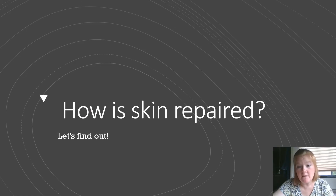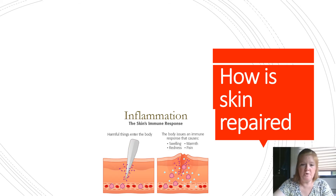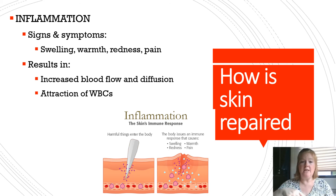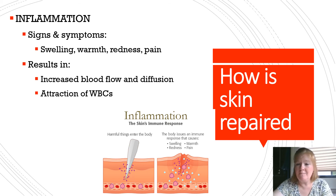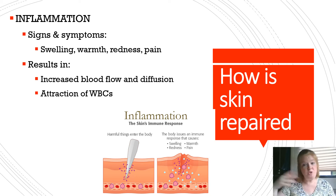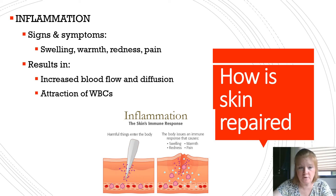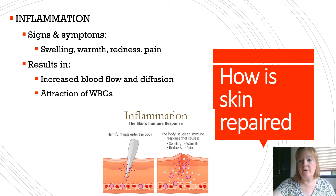How is skin repaired? We have inflammation and regeneration occurring at the same time. The signs and symptoms of inflammation are swelling, warmth, redness, and pain. Signs are objective things noticed by a physician; symptoms are more subjective, like a pain scale rating. Inflammation results in increased blood flow, diffusion, and attraction of white blood cells, and it helps begin the process of healing.